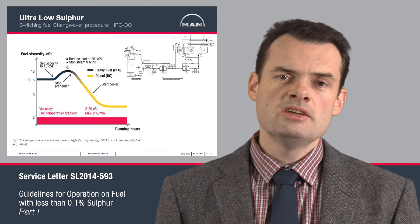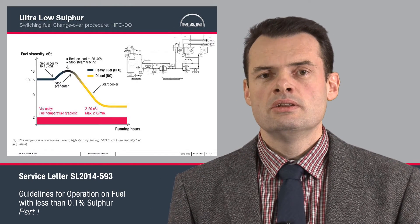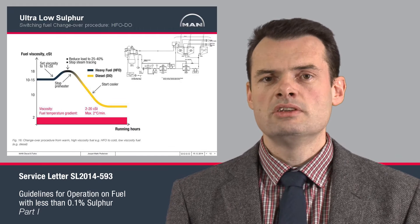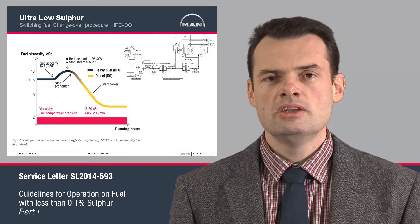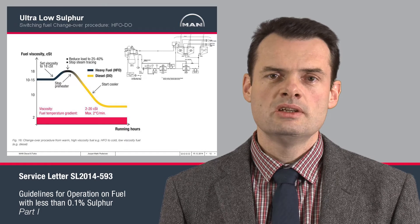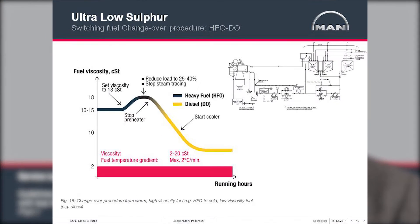Our recommendations for switching between hot heavy fuel oil and relatively colder distillates is to decrease the engine load to 25–40% and then switch the fuel valve. During the switch period, the engine load should be monitored, and very importantly, the viscosity.